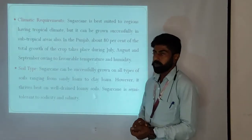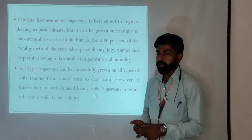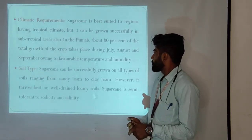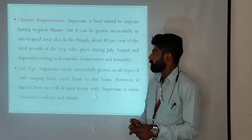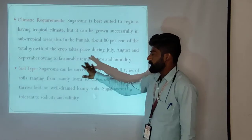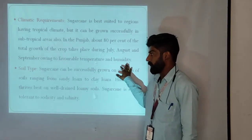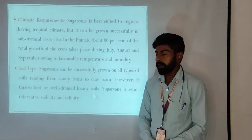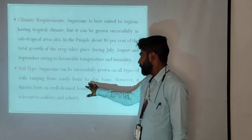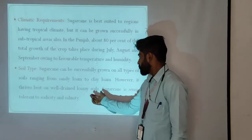Sugar cane is best suited to regions having a tropical climate, but it can be grown successfully in subtropical areas also. In Punjab, about 80% of the total crop takes place during July and September owing to favorable temperature and humidity. Sugar cane can be successfully grown on all types of soils ranging from sandy loam to clay loam soil. However, it thrives best on well-drained loamy soil. Sugar cane is semi-tolerant to sodicity and salinity.